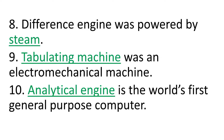Question number eight: Difference Engine was powered by Dash. The answer is: Difference Engine was powered by steam. Question number nine: Dash was an electromechanical machine. The answer is: Tabulating Machine was an electromechanical machine.